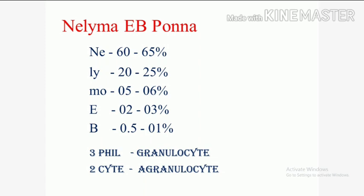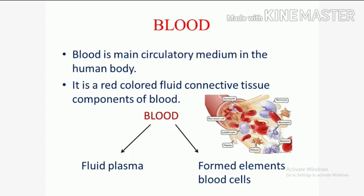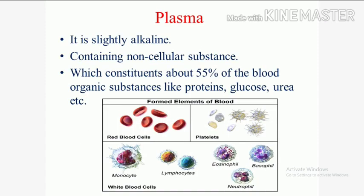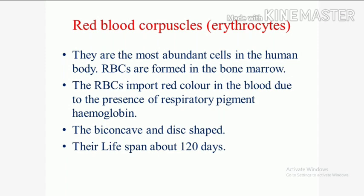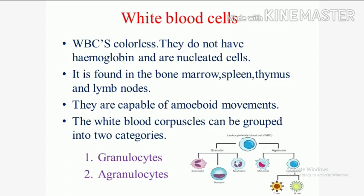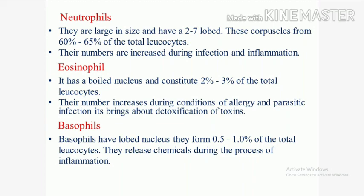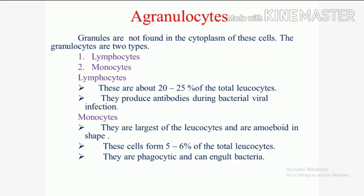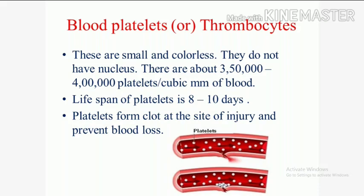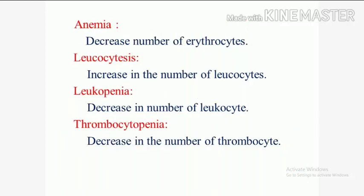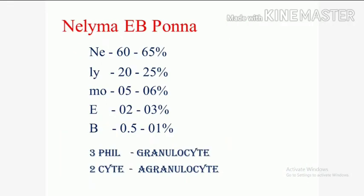Okay students, let us revise the topics we discussed. First, blood — what is blood, blood components, composition of blood, plasma, granulocytes with neutrophils, basophils, and eosinophils, agranulocytes with lymphocytes and monocytes, and finally blood platelets. Thank you.